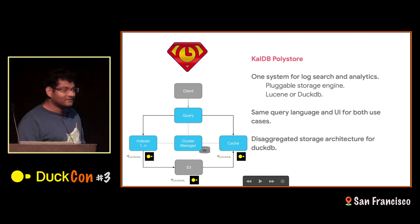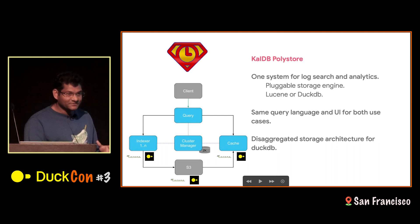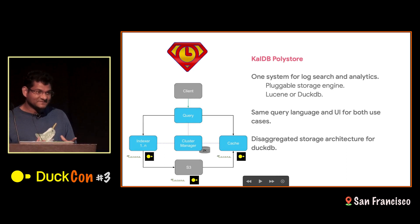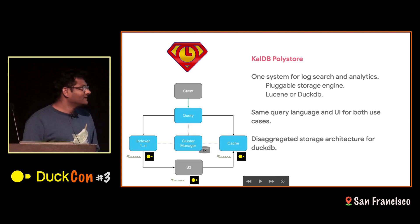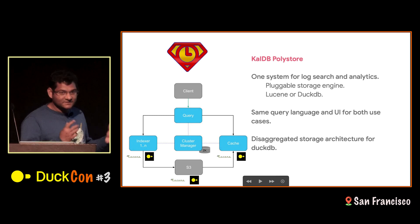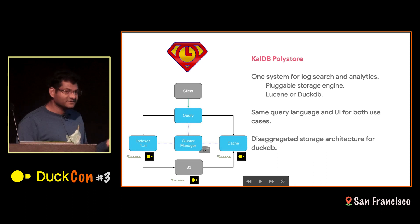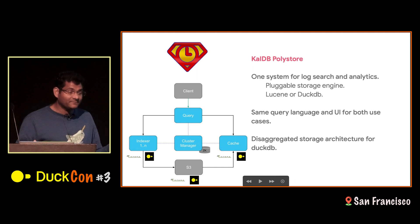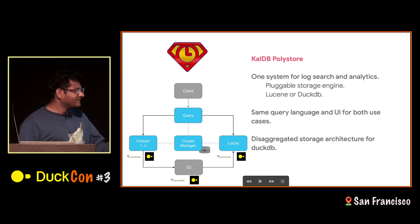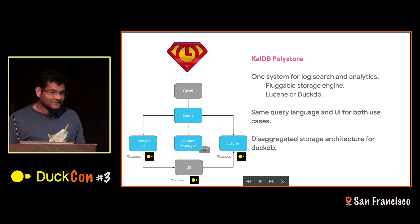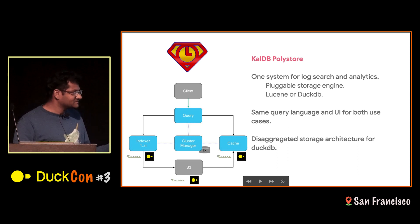So enter CalDB Polystore, and here is the big idea: we want to use one system for both log search and analytics. The way we do that is by building a pluggable storage engine. The two storage engines we have are Lucene and DuckDB. The advantage is users get the same query language and the same UI regardless of the storage engine. And CalDB brings to the table for DuckDB a disaggregated storage architecture and a scatter-gather mechanism on top of DuckDB.